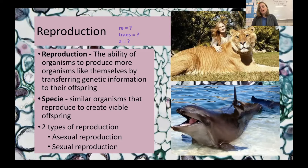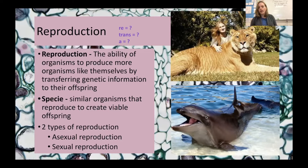These examples — mules, ligers, wholphins — are all able to be born and carry out normal life functions, but they are not able to reproduce. So to get any of these hybrid organisms, you have to breed the two different species together again. For example, you can't get another wholphin unless you breed a whale and a dolphin together — two wholphins are incompatible and do not work.